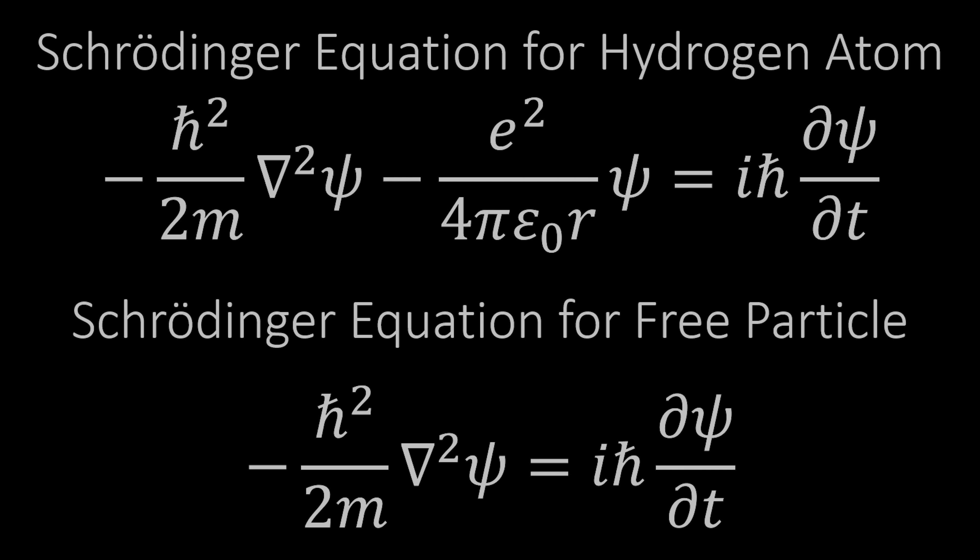When you do that, you end up with the Schrödinger equation for a free particle. Notice now there's no charge term anymore, so it doesn't really matter that it's an electron—could be any particle.